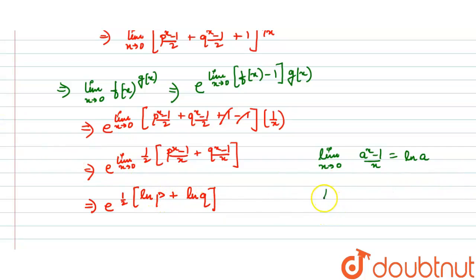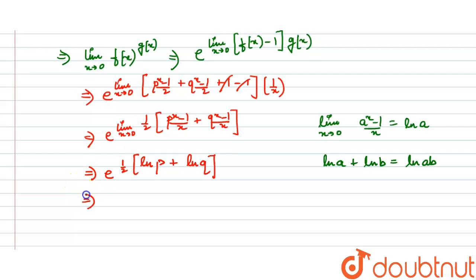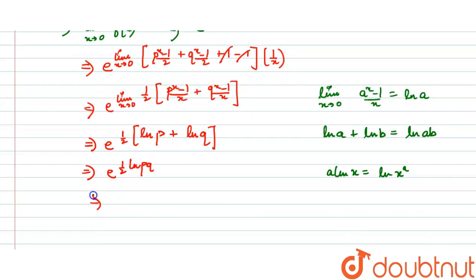Now, ln p plus ln q can be written as ln(pq), using the logarithm property ln a plus ln b equals ln(ab). So the expression becomes e raised to the power half of ln(pq). And since a times ln x can be written as ln(x^a), with a equal to 1 by 2, this becomes e raised to the power natural log of root pq.